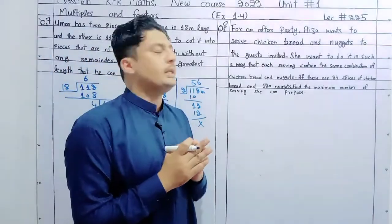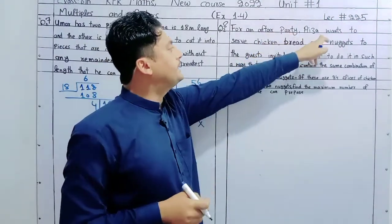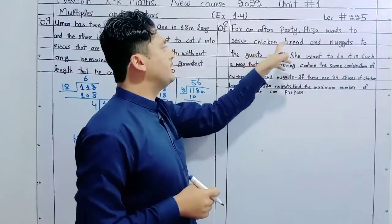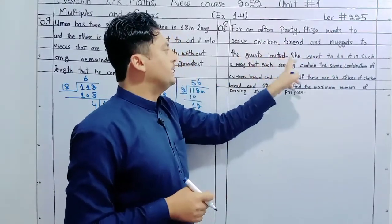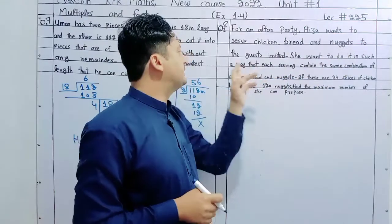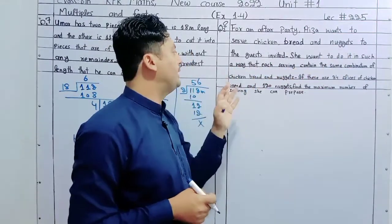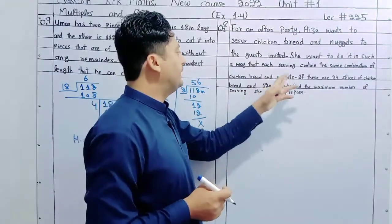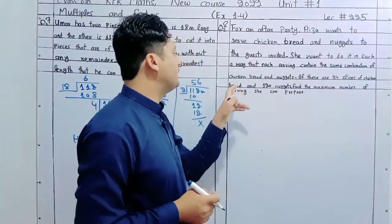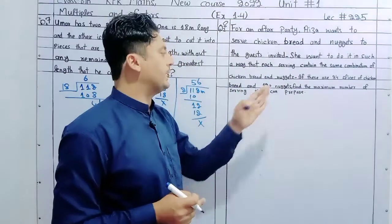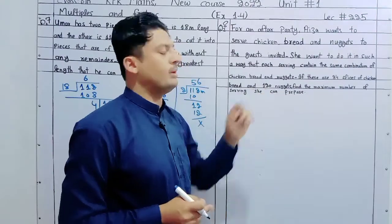Moving to Question Number 8. A party hostess wants to serve chicken bread and nuggets to guests. She wants to do it in such a way that each serving contains the same combination of chicken bread and nuggets. There are 24 slices of chicken bread and 120 nuggets. Find the maximum number of servings she can prepare.